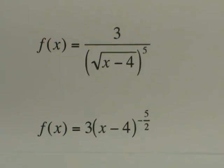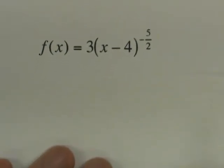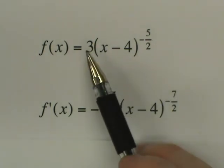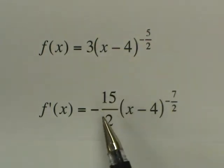And so as we use our power rule, the first thing we want to do, take this negative 5 halves, multiply by 3, that gives us negative 15 halves.